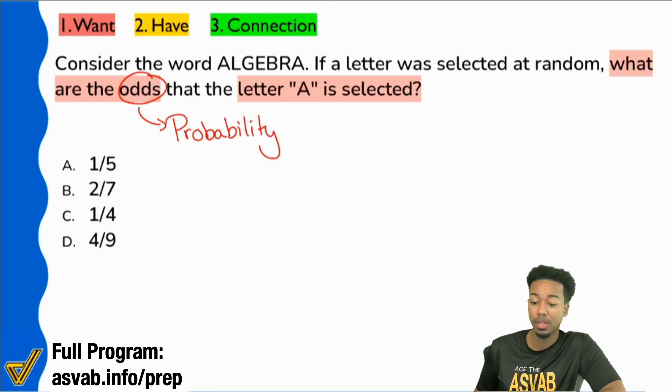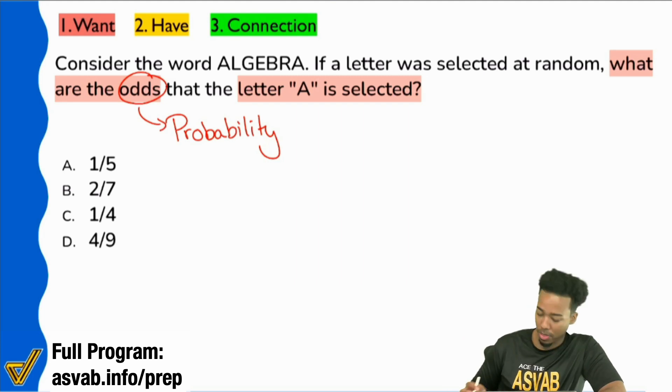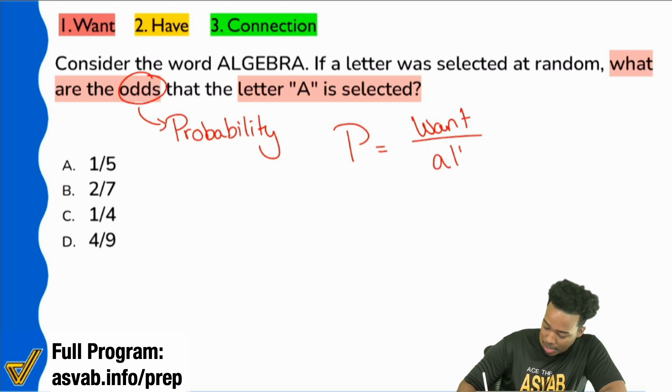Okay, that is probability all the way through. What are the odds? And probability again is what you want divided by all possibilities.